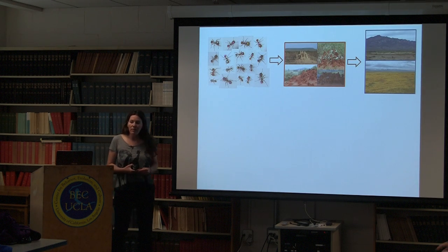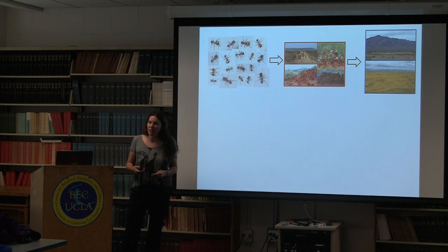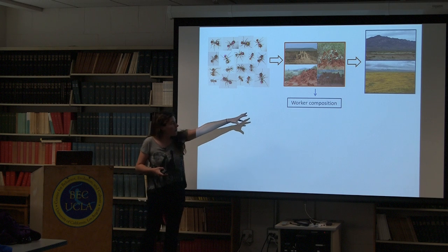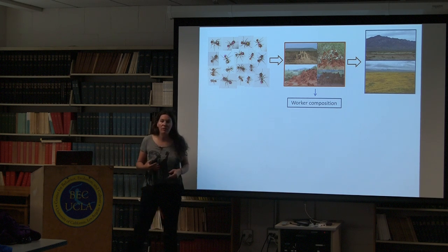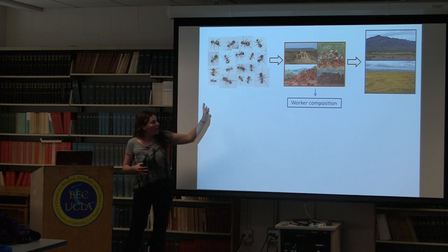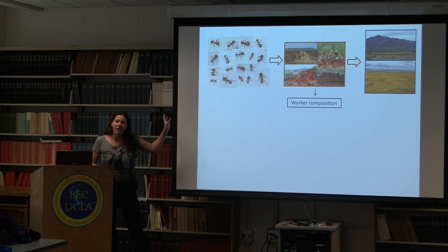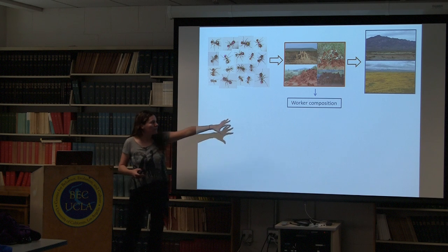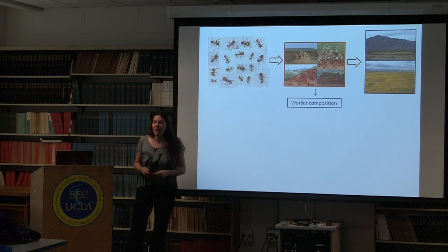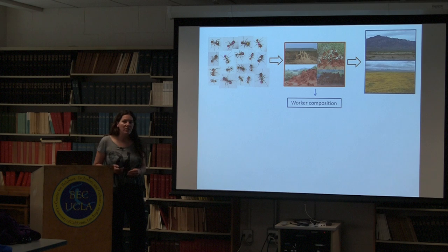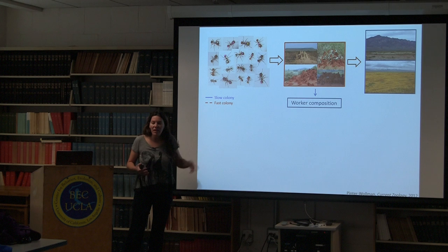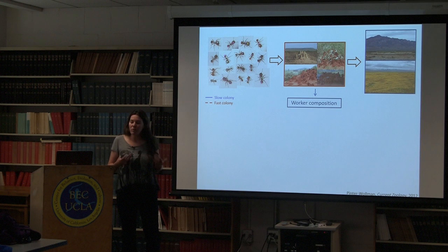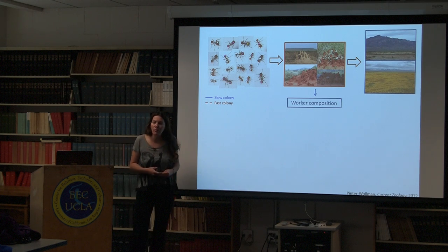When I think about variation at the collective level, most of my talk will discuss how worker composition in a colony influences its behavior. When we think about worker composition, let's say we go to the field and look at two colonies - the blue colony and the red colony. We give them some food, and the blue colony is much slower at finding this new food than the red colony.